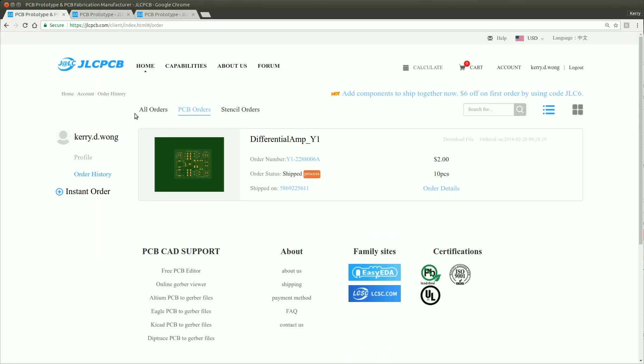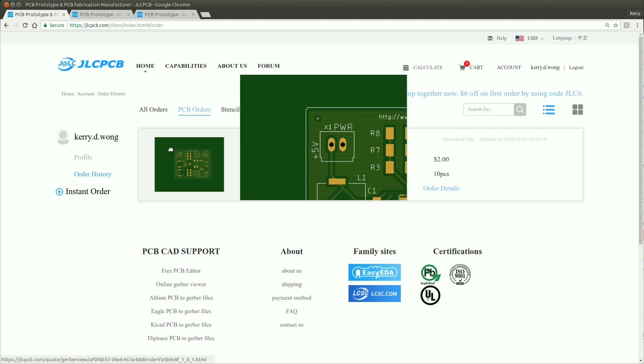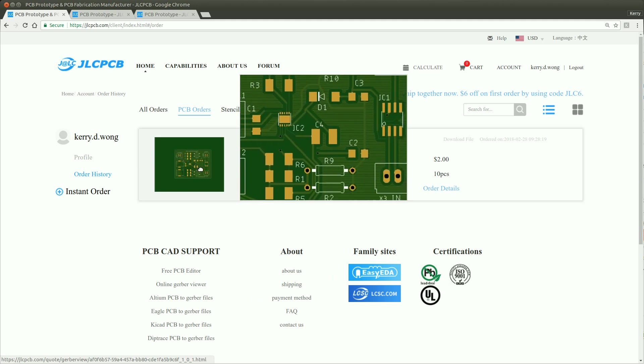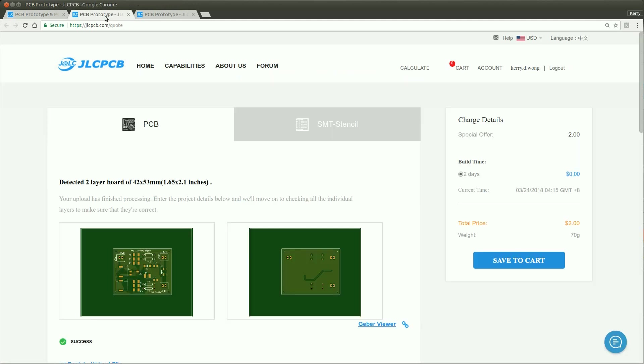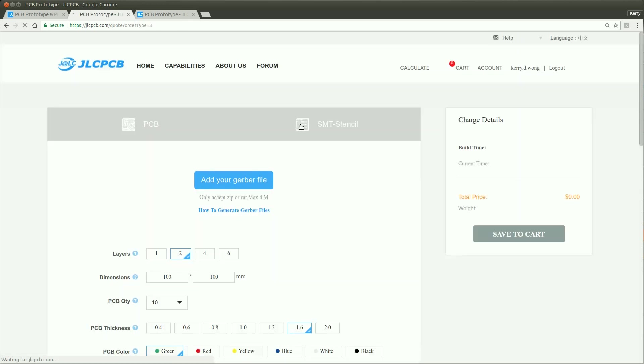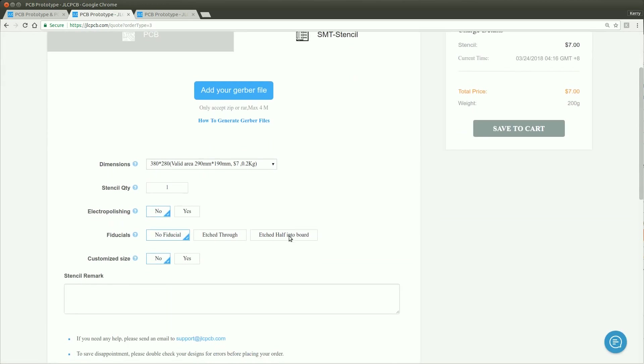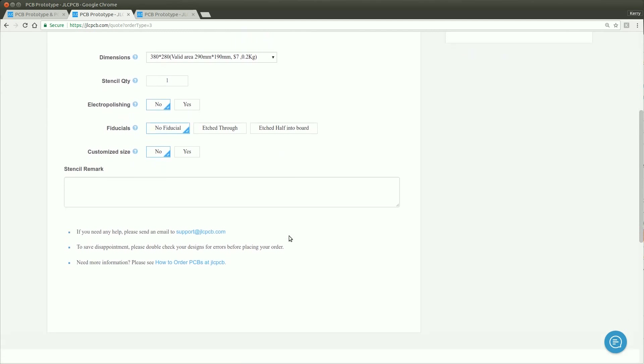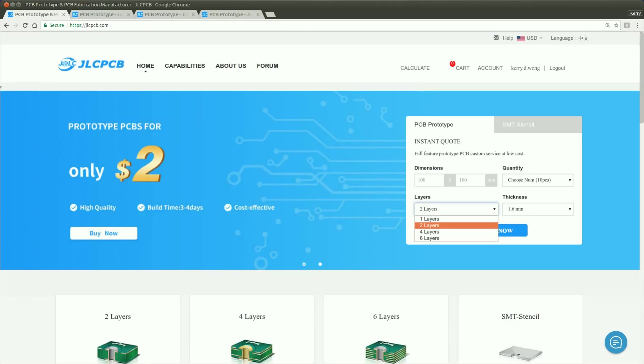You can also order a standard 28 centimeters by 38 centimeters laser cut stainless steel stencil for your design for just an additional nine dollars. JLC PCB can manufacture PCBs up to six layers at a very competitive price, so why not give them a try for your next electronics project.